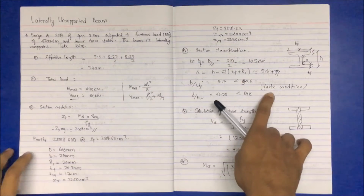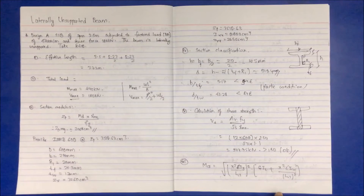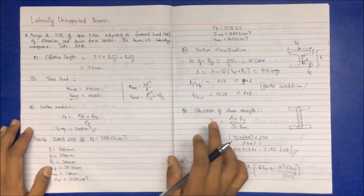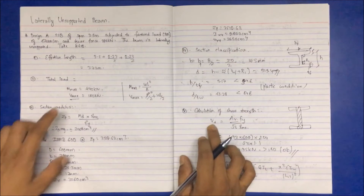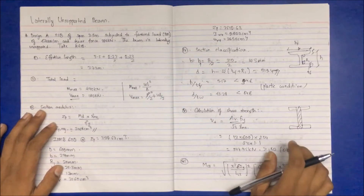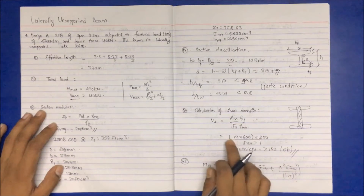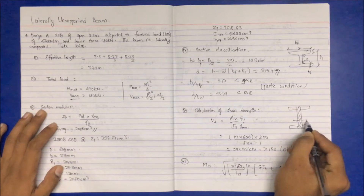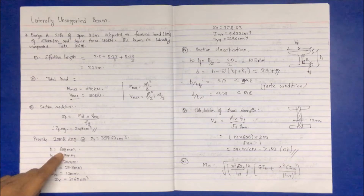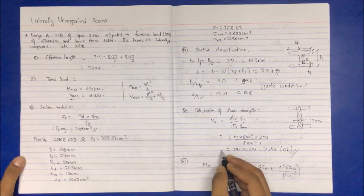We assume a plastic section condition, meaning deformation remains after the load is removed. The next step is calculating shear strength. The design shear strength V_d = A_V × F_Y / (√3 × γ_M0), where A_V is the shear area — for an I-section, this is the web area (depth × web thickness). With depth 600 mm and F_Y 250 MPa, we get V_d = 944.75 kN, which must be greater than V_max.